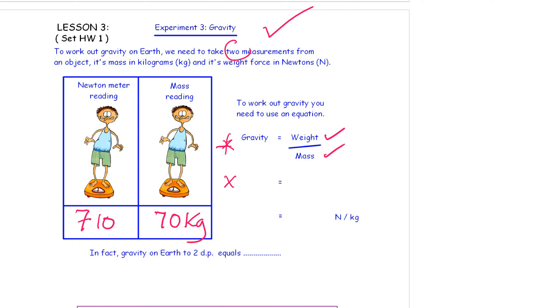Number two, you always write down your workings. So your weight force, 710, divided by my mass, 70. And I get a value for gravity to two decimal places of 10.14 Newtons of weight force for every single kilogram of my mass.